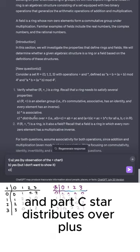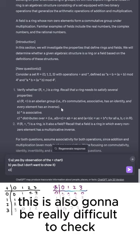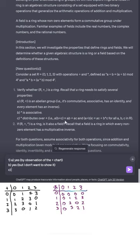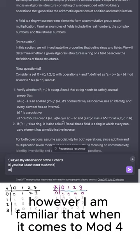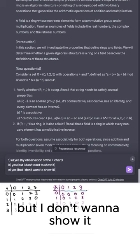And part C, star distributes over plus. A times B plus C equals AB plus AC. This is also going to be really difficult to check. However, I am familiar that when it comes to mod 4, I do believe the distributive property works. So I'm going to put yes, but I don't want to show it.